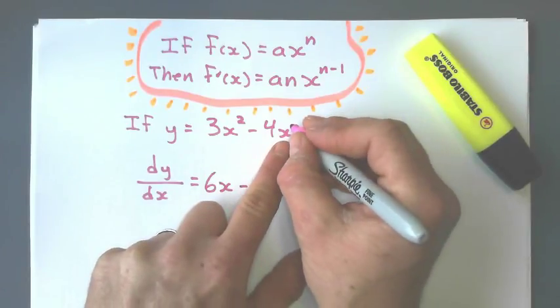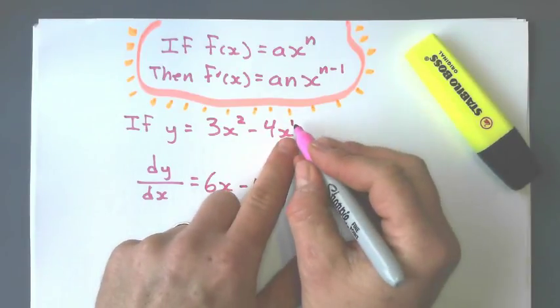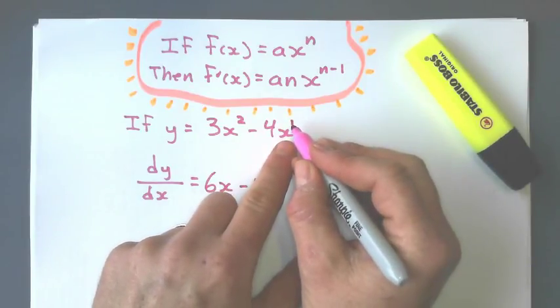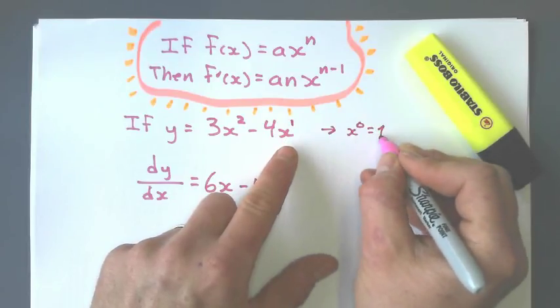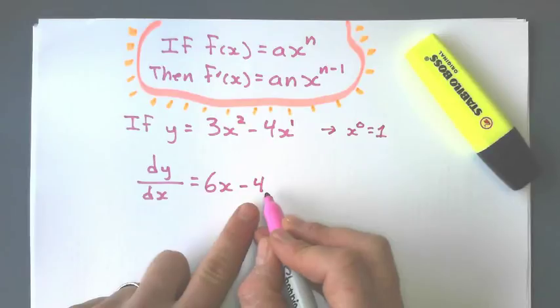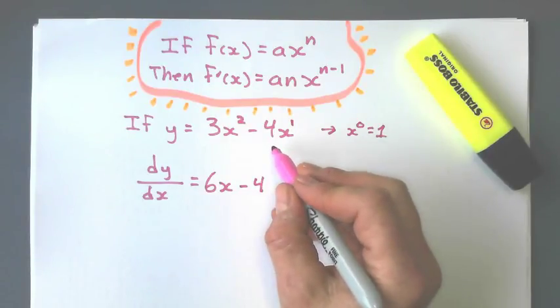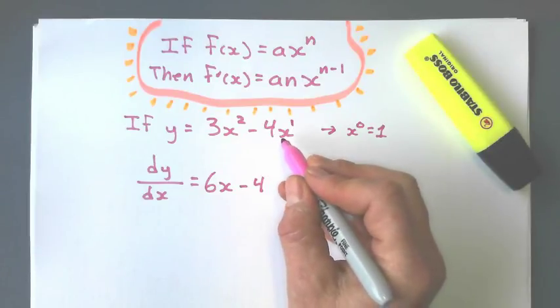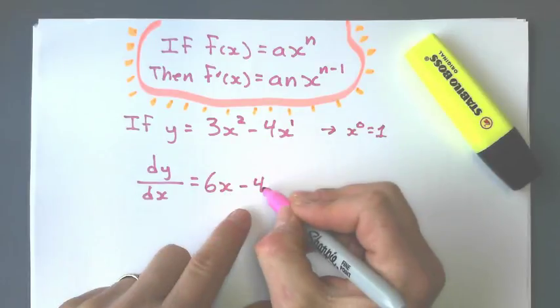Next term, what's the exponent here? There's a 1 there. 1 times 4 is 4. And when I subtract 1 from 1, I'm left with x to the 0, which equals 1. So that does not have a variable next to it anymore. So what that means is anytime you differentiate a term that is just x, it's always going to be just that coefficient.